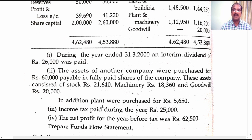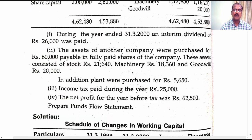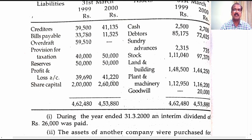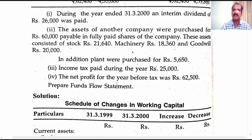In addition, plant was purchased for 5,650. This is an application of fund and should be taken over to the funds flow statement. Income tax paid during the year was 25,000 — this would be channelized through the provision for taxation account. Payment of tax is an application of fund and would be taken over to the funds flow statement. The net profit for the year before tax was 62,500. When profit is given in the additional information along with the provision of opening and closing balances of profit in the balance sheet, you don't worry about this net profit before tax of 62,500 given in the additional information — you can very well ignore it. Prepare funds flow statement.